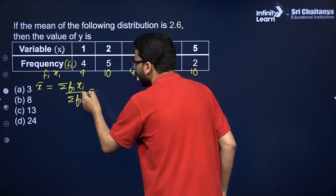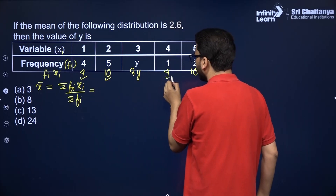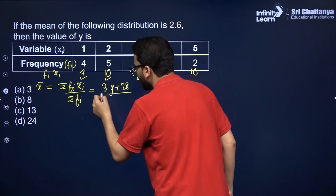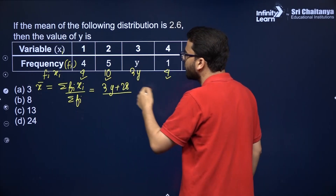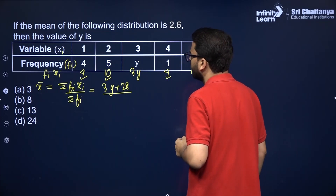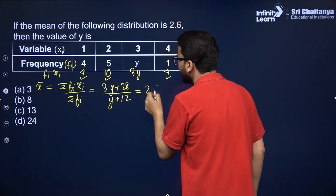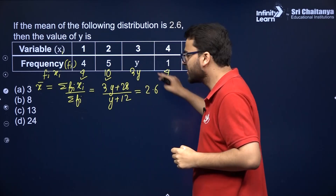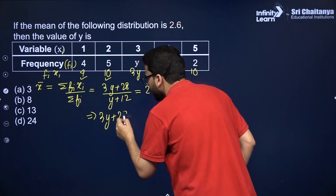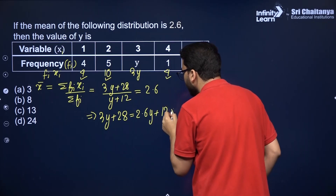Now find Σfi·xi by adding: it will be 3y + 28. In the denominator, adding the frequencies gives Σfi = y + 12. Setting this equal to 2.6, we have (3y + 28) / (y + 12) = 2.6. Let's cross-multiply to solve.